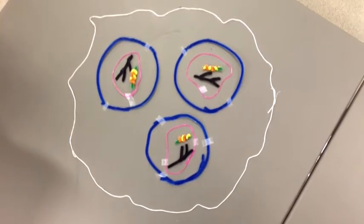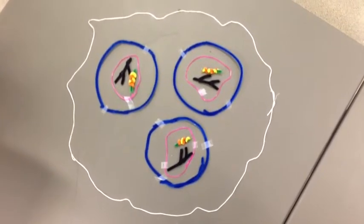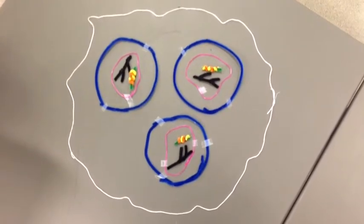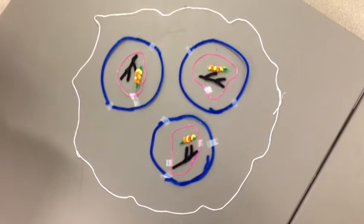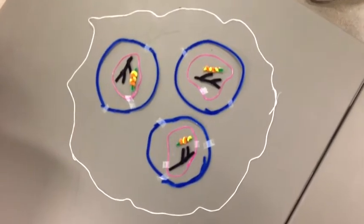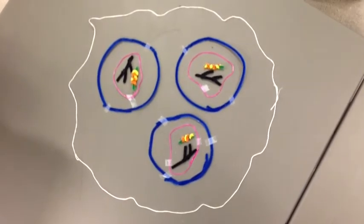Skeletal muscles have fascicles, represented by the white yarn. Inside the fascicle going into the myofiber, or muscle cell, represented by the blue pipe cleaner. The myofiber is made up of myofibrils, represented by the pink yarn. And these myofibrils are what hold the thick and thin filaments, myofilaments, represented by the myosin molecule and the actin-tropomyosin and troponin molecule.